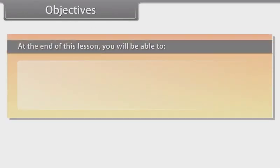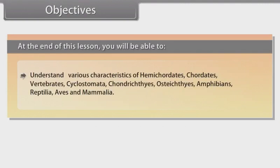Objectives. At the end of this lesson, you will be able to understand various characteristics of Hemichordates, Chordates, Vertebrates, Cyclostomata, Chondrichthyes, Osteichthyes, Amphibians, Reptilia, Aves and Mammalia.